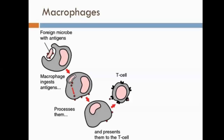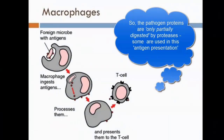Let's look at macrophages — a special kind of phagocyte found in the lymph nodes. They engulf pathogens once identified as foreign by their antigens. Instead of completely destroying them like most phagocytes do, they display antigens on their surface, making them a form of antigen-presenting cell.